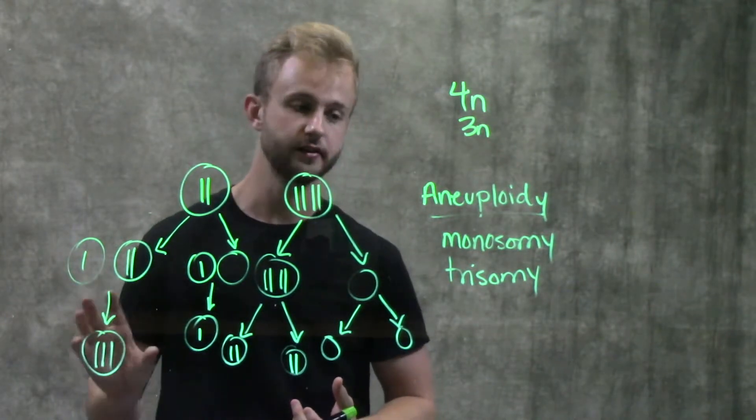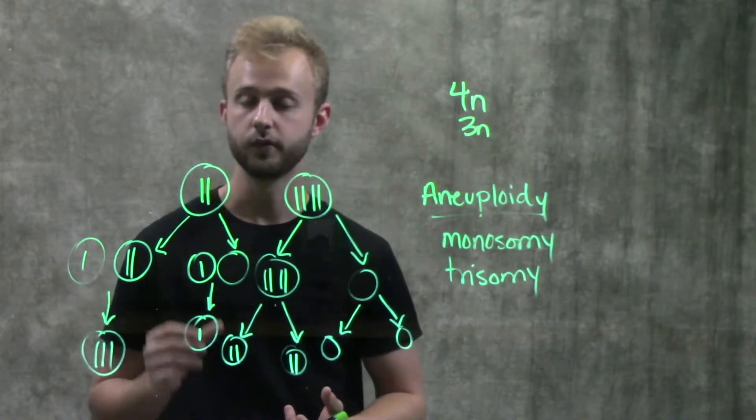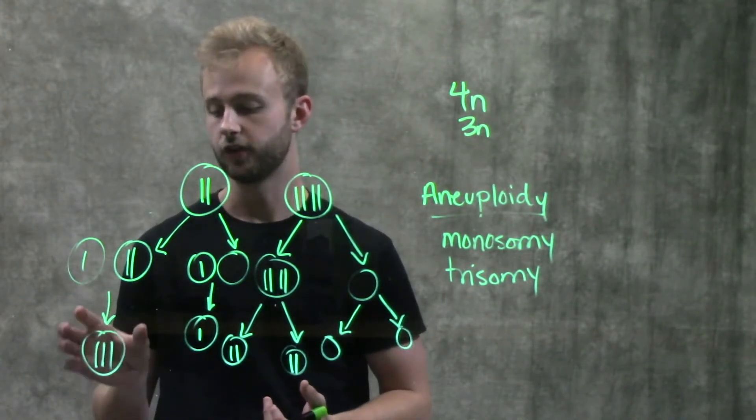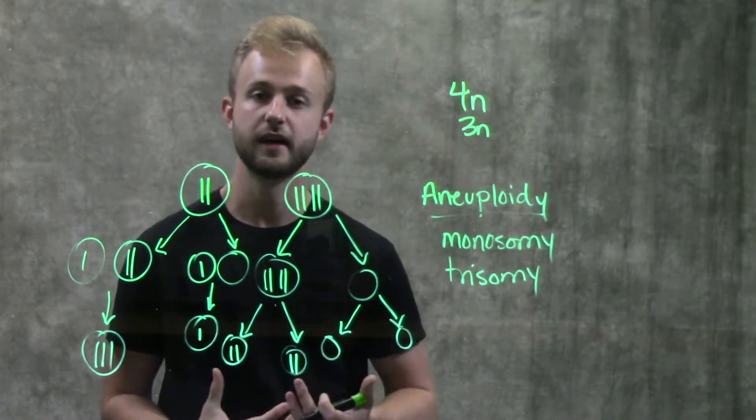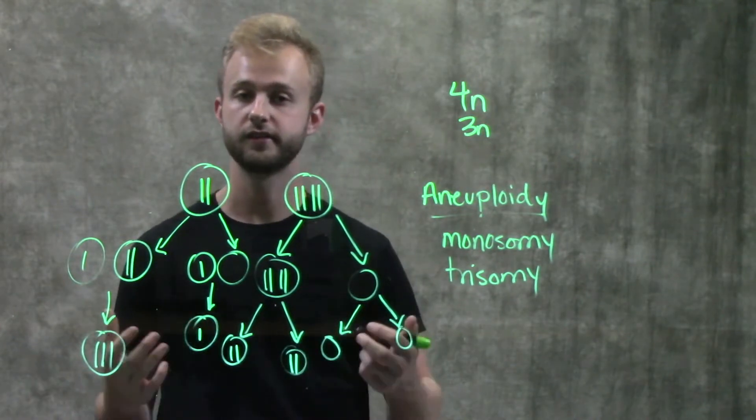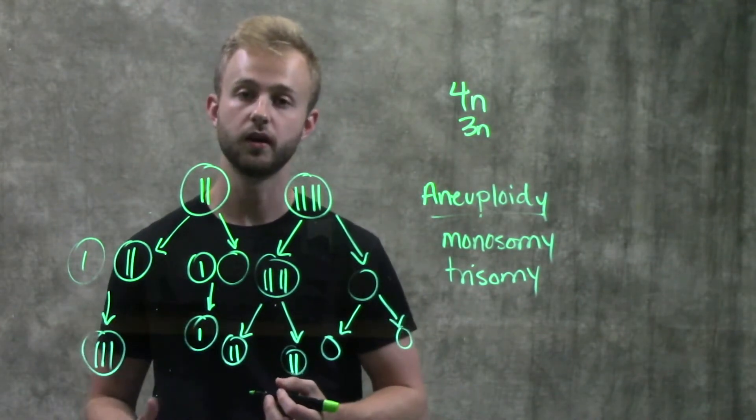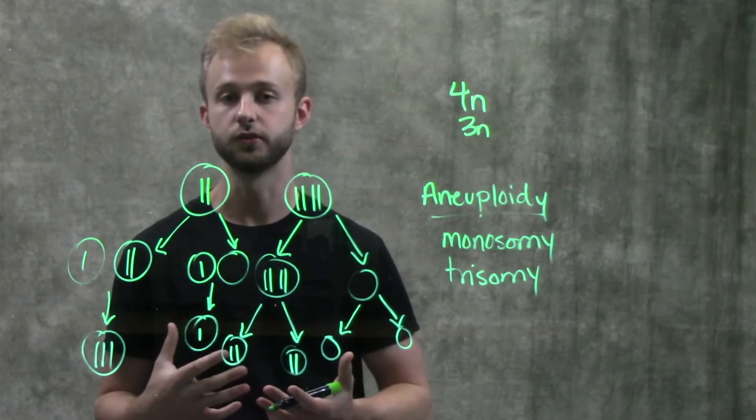Individuals with trisomy, some conditions that we see trisomy in would be trisomy 21, which is Down syndrome. And so after we have this zygote, trisomy 21 isn't going to cause the death of the zygote typically. And so when this divides mitotically, all of the cells end up with three copies of chromosome 21, and that results in those phenotypic characteristics of these individuals.